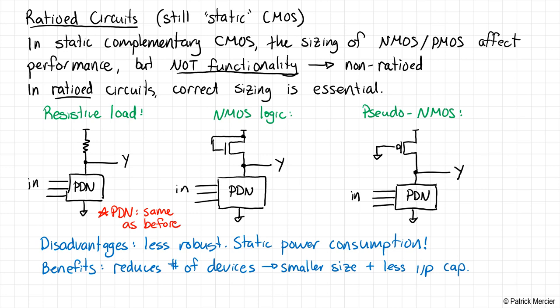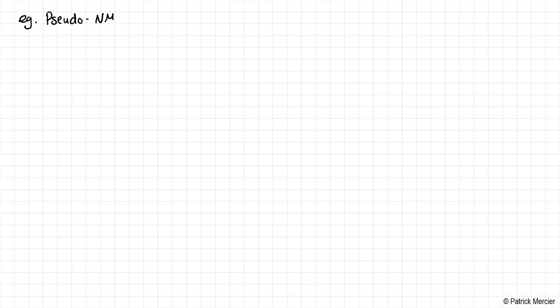The downsides usually outweigh the benefits, but there are specific instances where we actually still build these circuits today — not typically resistive load, but more like a pseudo-NMOS kind of load. Now that we've had an introduction to ratioed circuits, I'd like to look at an example — specifically an example of a pseudo-NMOS gate. Let's look at the simplest possible example: an inverter.